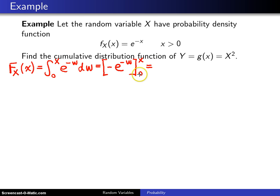When you plug in 0, you get e^0, which is 1, and when you plug in x, you get -e^(-x), and that is for x > 0.